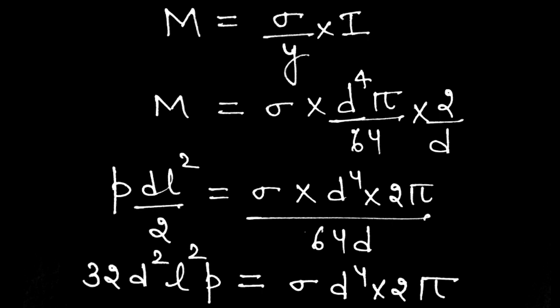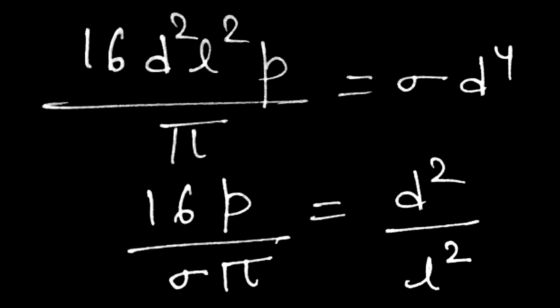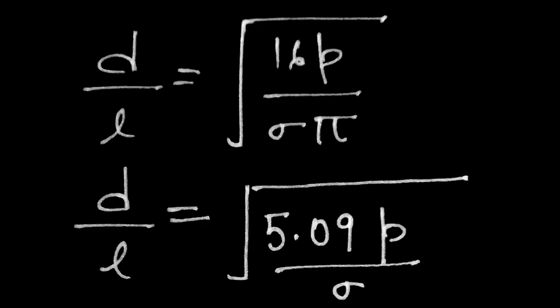After substitution and simplification, we get: pressure × D × L² = σ × D⁴ × π / 16. Cancelling D terms from both sides, D² cancels out, and we arrive at D²/L² = 16 × pressure / (σ × π). Taking the square root of both sides, we find the final relation: D/L = √(16P / (σπ)). This is our D-to-L relationship.